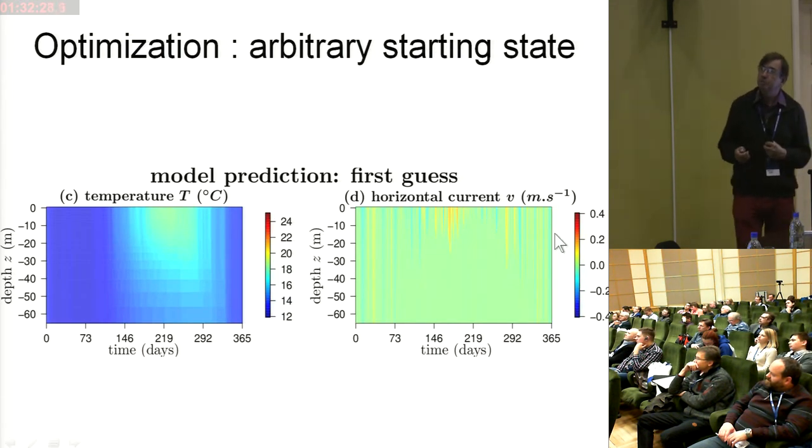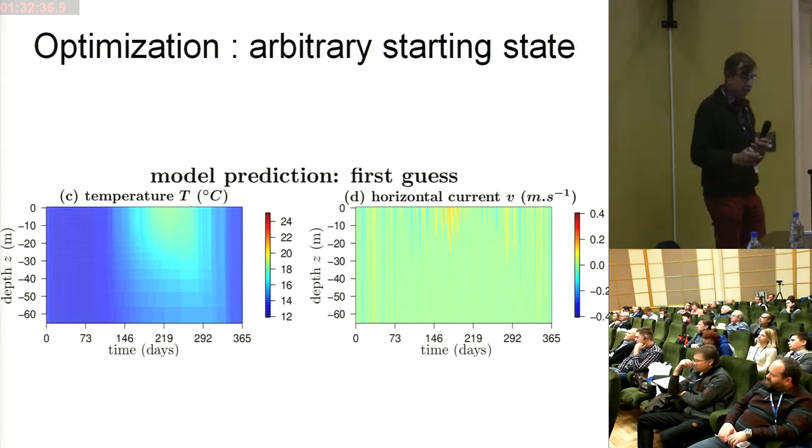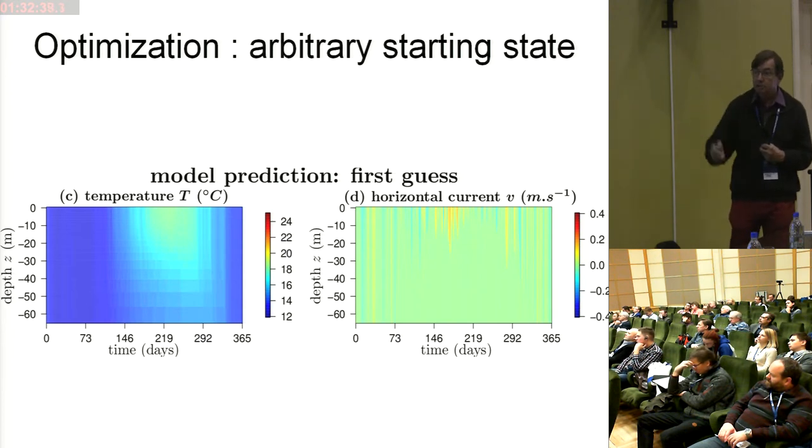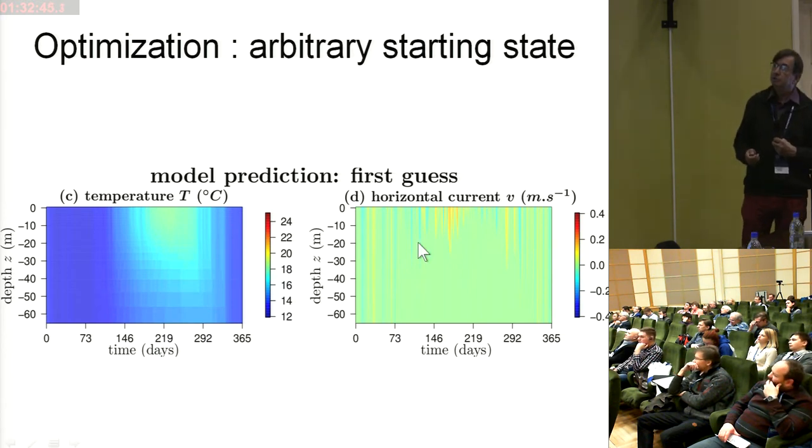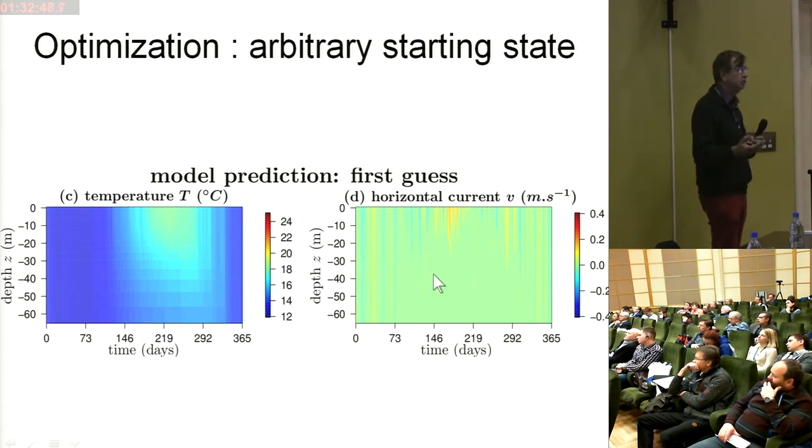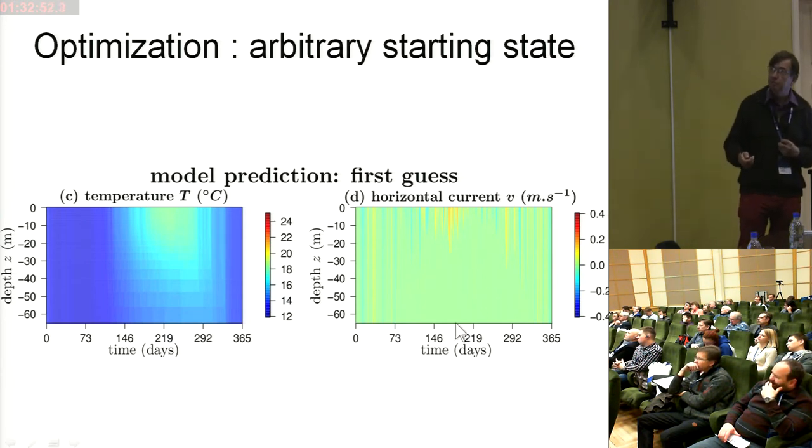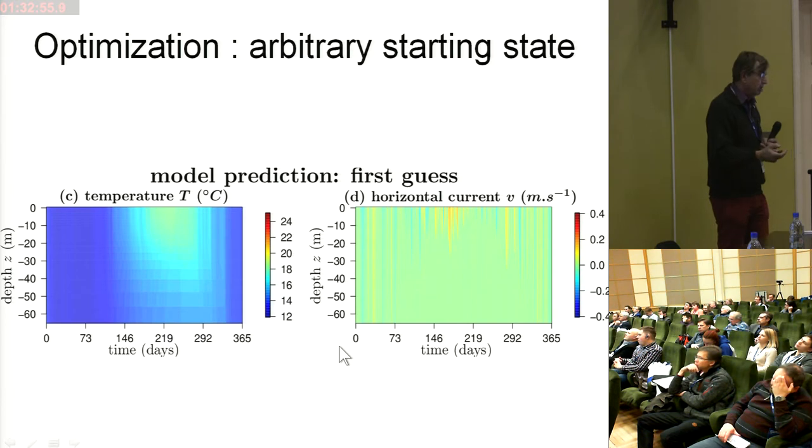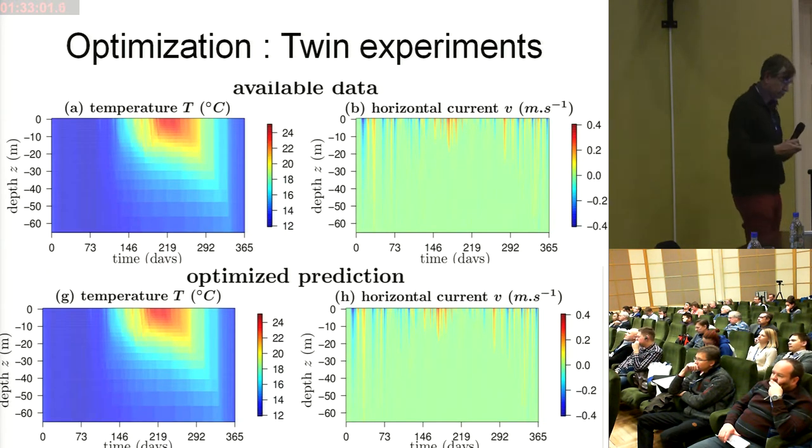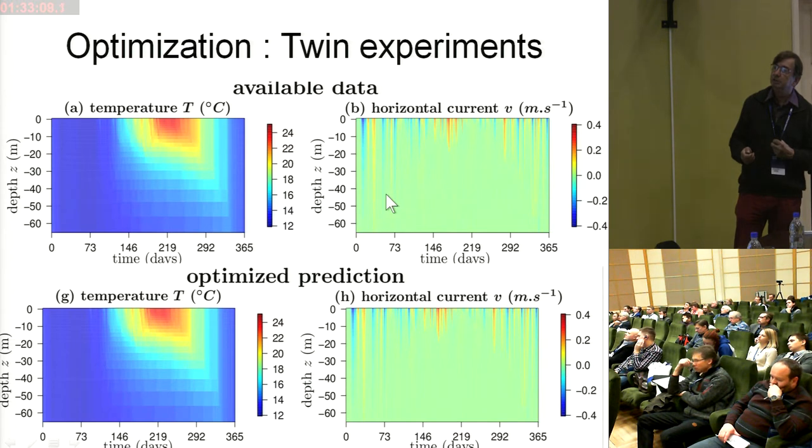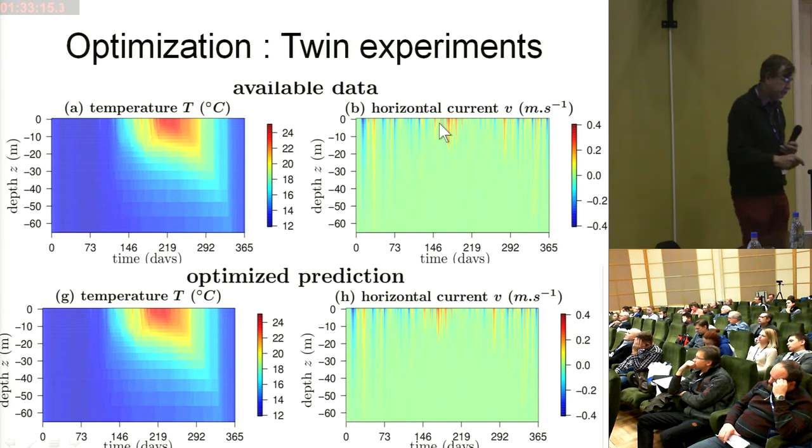And these are numerical experiments. So we start, we used 1D model, 1D representation, that represents 1D, let's say vertical profile, and we have temperature and velocity, and this is extracted from a realistic simulation. So this is the time evolution of a vertical profile in a realistic situation using a NEMO model, and then we will perturbate this and try to recover the turbulent coefficients. So this is the so-called model available data, and this is optimized prediction, so you can see that we have a very good recovering of this with the method.